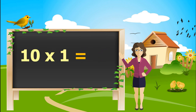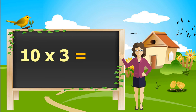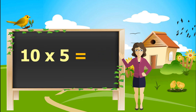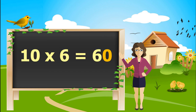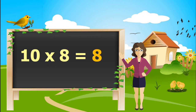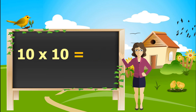10 ones is 10. 10 twos are 20. 10 threes are 30. 10 fours are 40. 10 fives are 50. 10 sixes are 60. 10 sevens are 70. 10 eights are 80. 10 nines are 90. 10 tens are 100.